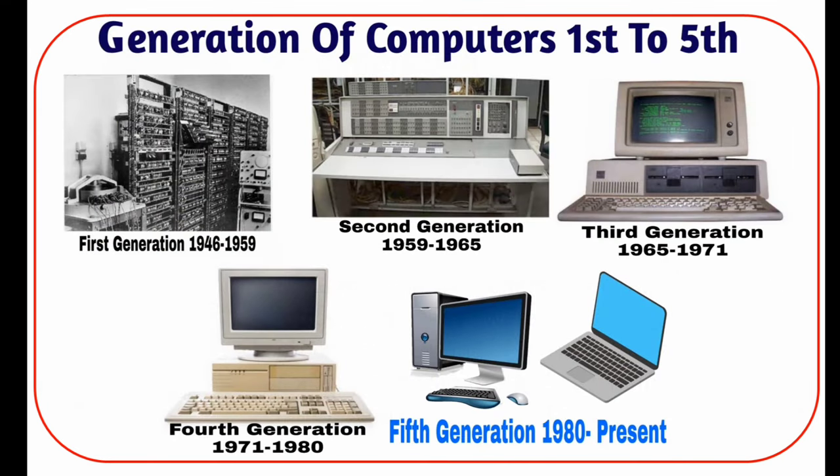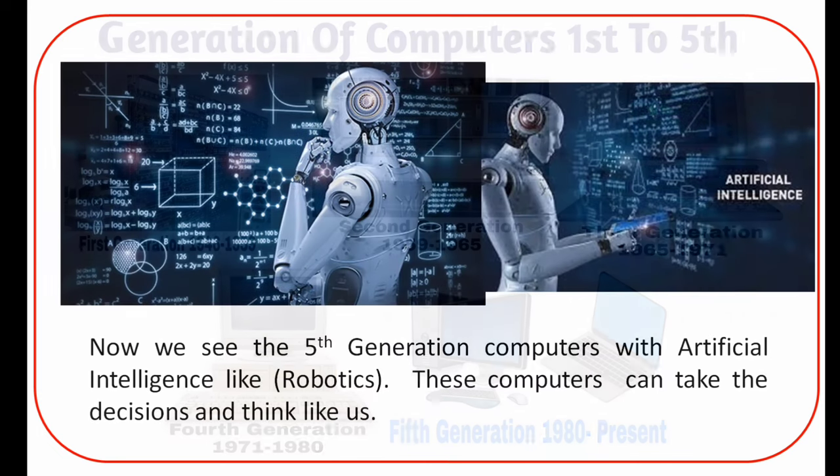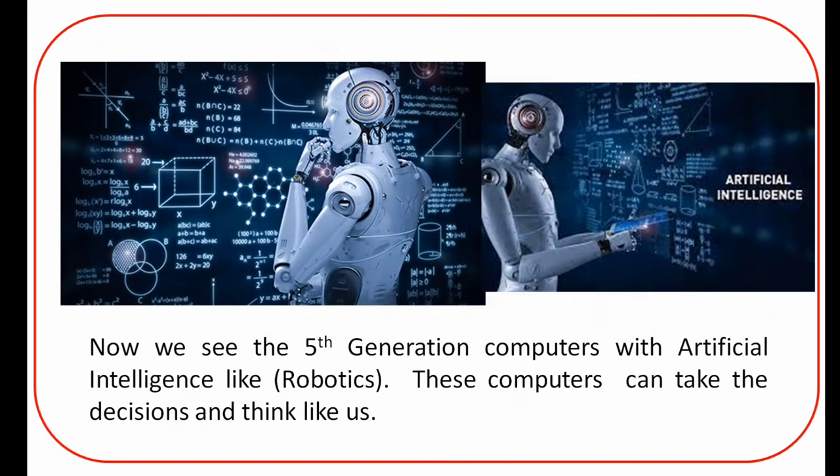In this image we can see the development of computers from first to fifth generation. Fifth generation computers are based on parallel processing hardware and artificial intelligence. They were initiated by Japan's Ministry of International Trade and Industry, beginning in 1982. These fifth generation computers, with artificial intelligence like robotics, can take decisions and think like humans.